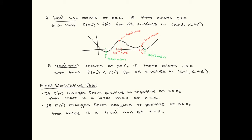How do we identify where the local max and local mins are happening? It looks like the function is changing from decreasing to increasing every time there's a local min. The local max is changing from increasing to decreasing. Remember, increasing and decreasing means that the first derivative is respectively positive and negative. So if the first derivative changes from being positive to negative, that would look something like this.